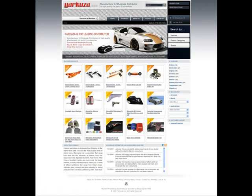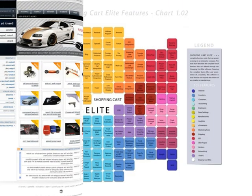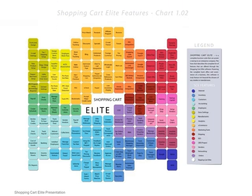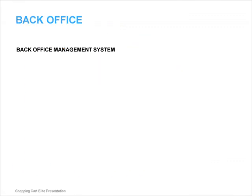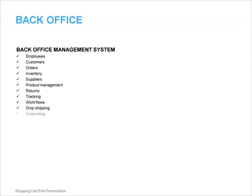Perhaps now you can understand the enormous amount of work that goes into something that appears very straightforward. The second part of a shopping cart is the back office, or some call it the management system, where a website owner manages employees, customers, orders, inventory, suppliers, product management, returns, tracking, workflows, drop shipping, accounting, shipping, analytics, and search engine marketing.